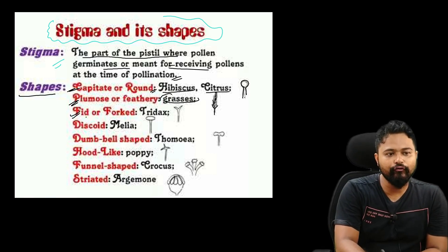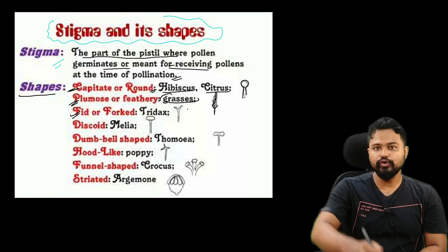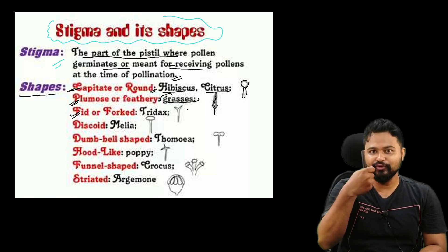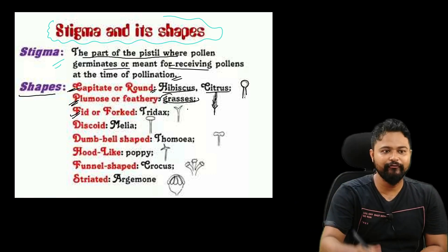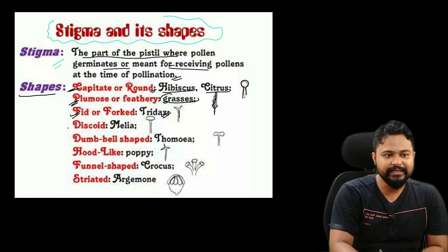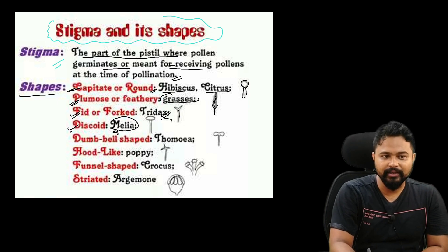Third shape: bifid or forked. Forked means a fork type. Example: Tridax. Fourth: discoid — disc-shaped.